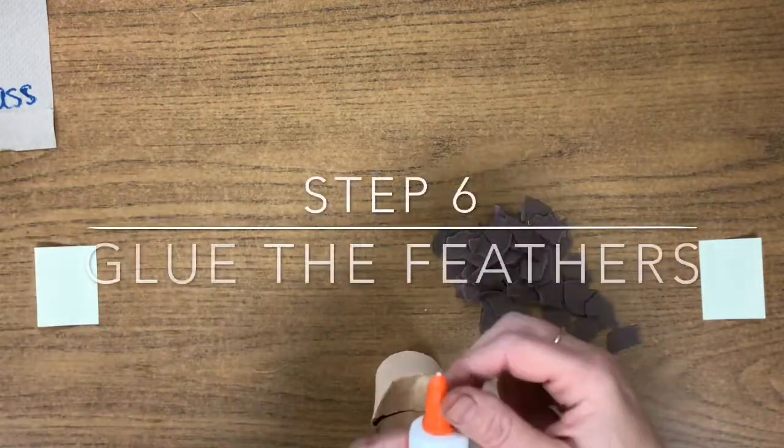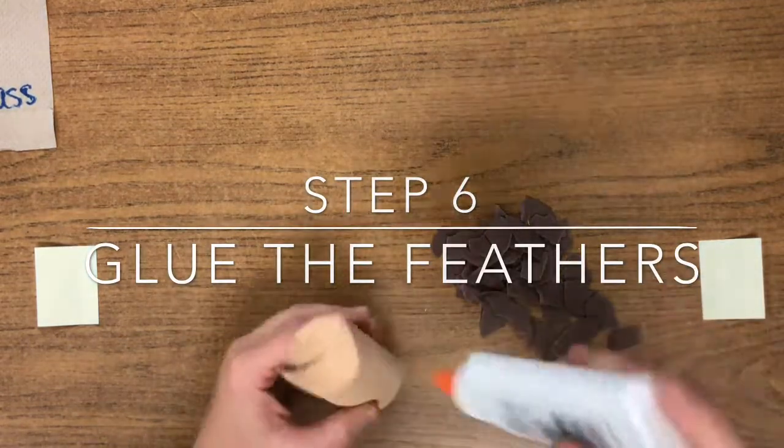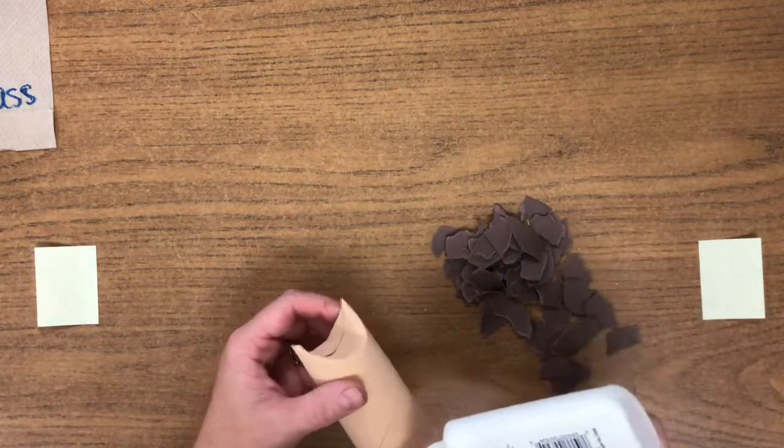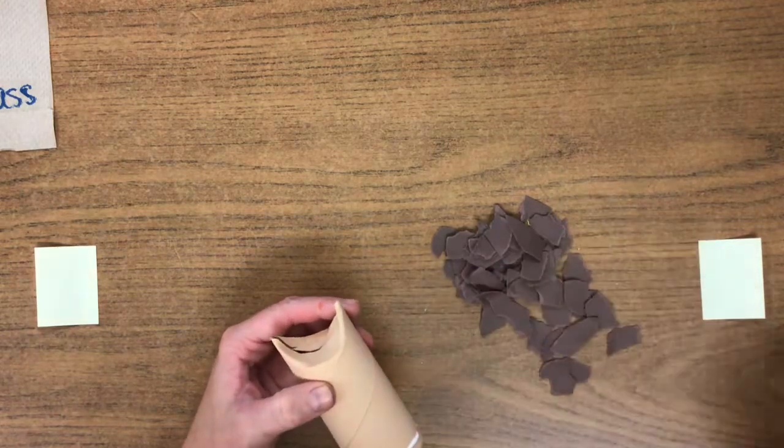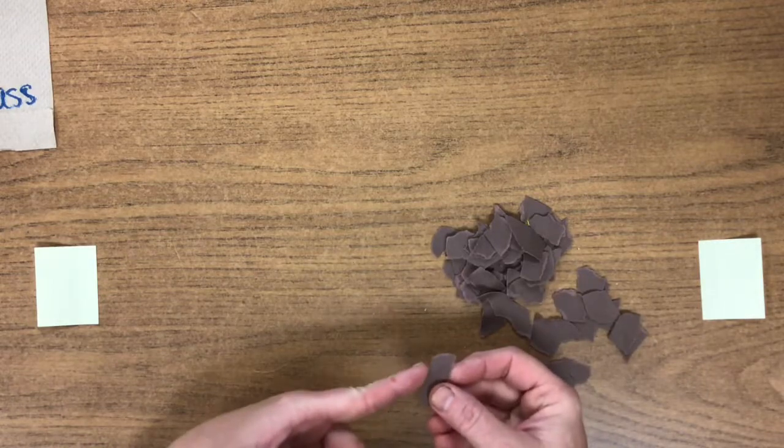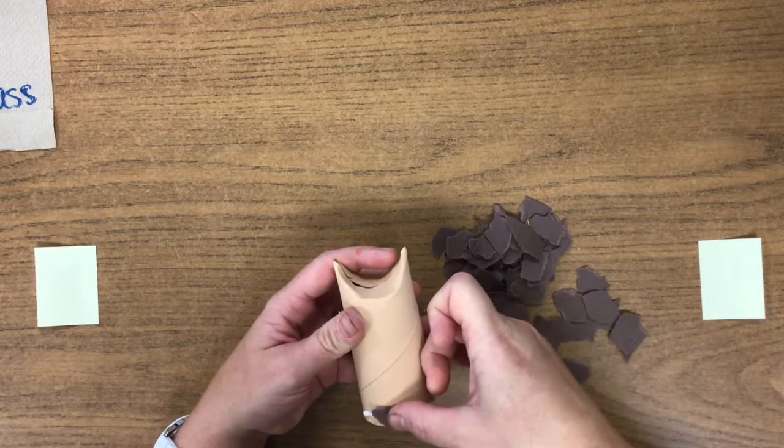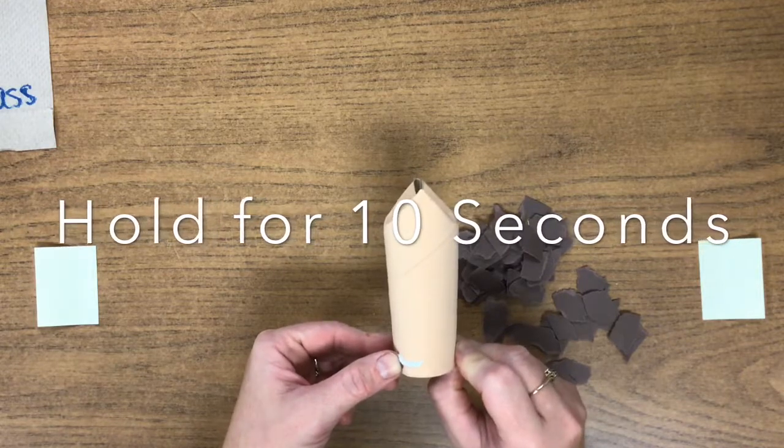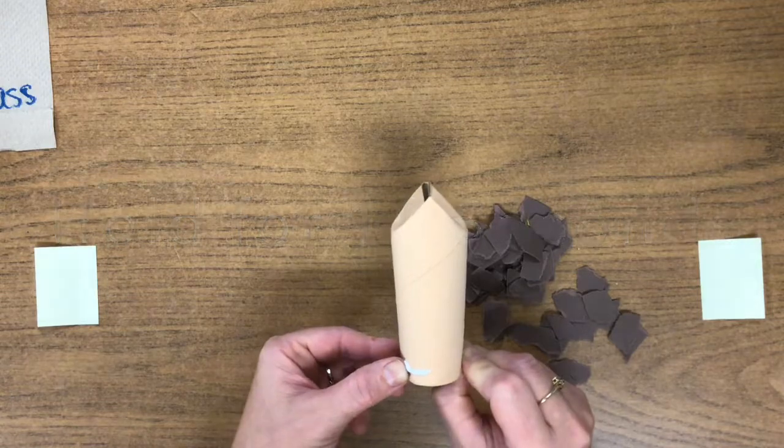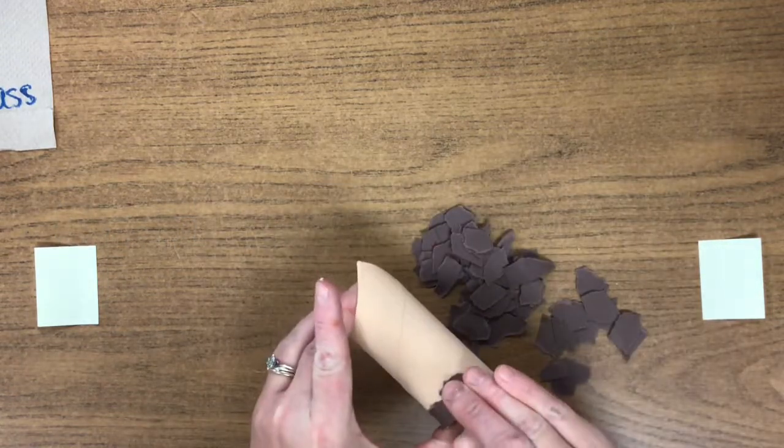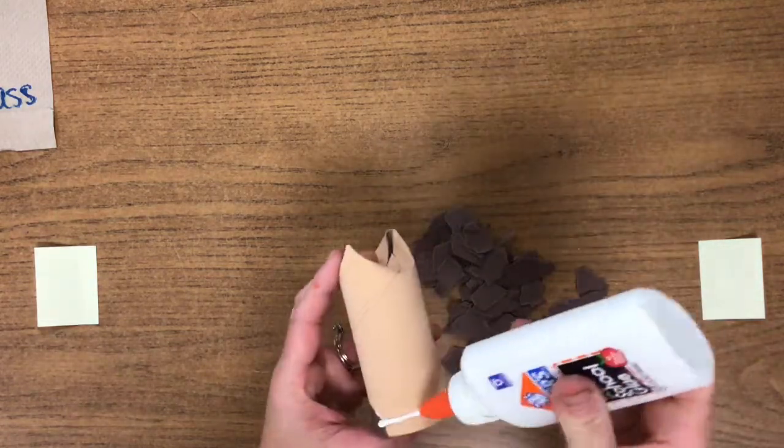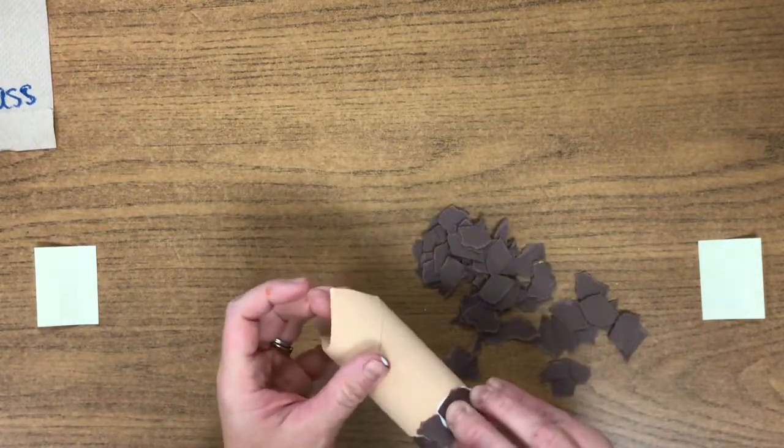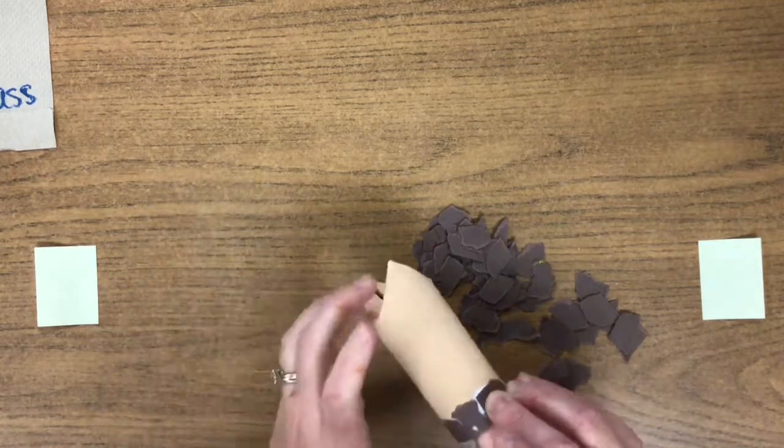For the next part of the project, we're going to be using Elmer's glue. You're going to untwist the cap. If you just take the bottle and shake it one, two, three times upside down, the glue will come out much easier for you. Now we usually use the rule dot, dot, not a lot. But for this project, we're just going to put a very thin line of glue towards the bottom of the paper towel roll. You're going to try to find pieces that have a straight edge so that you can line those directly up to the bottom of your roll. And every time you put a piece on, you're going to have to hold it for about 10 seconds before you move on to the next piece.